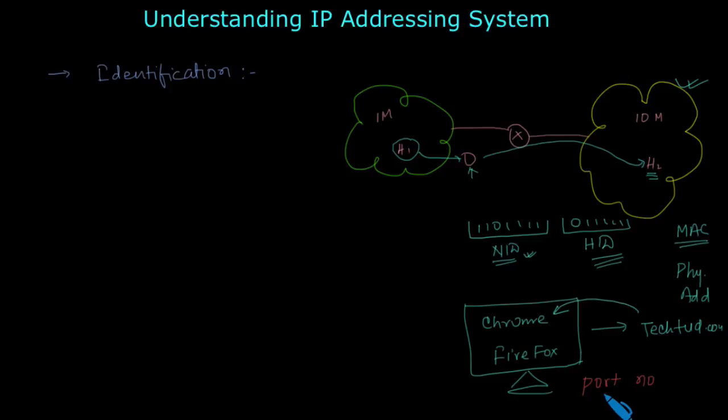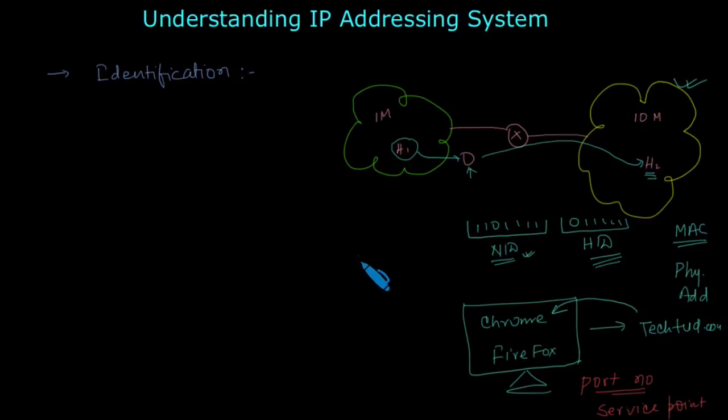Using this port number and IP address, the socket is created - all these things happen, which we will discuss later. This is how the problem of identification is solved. The major part is this logical IP addressing system, which we will understand now. Let's understand IP address in more detail.